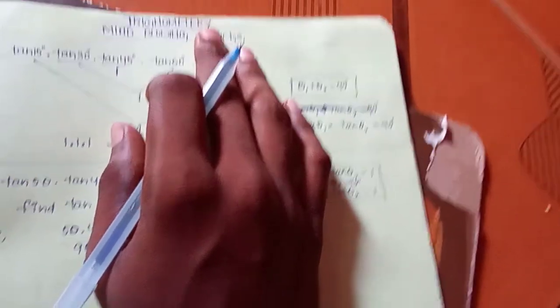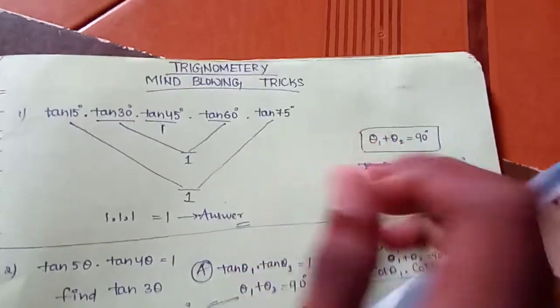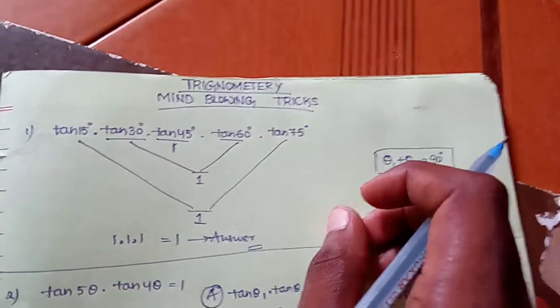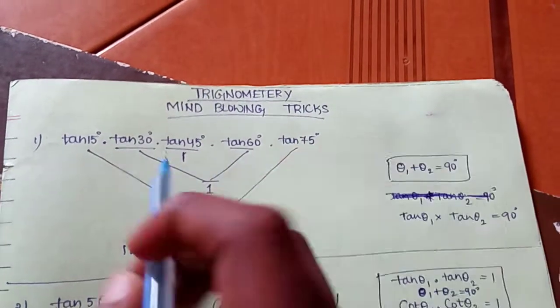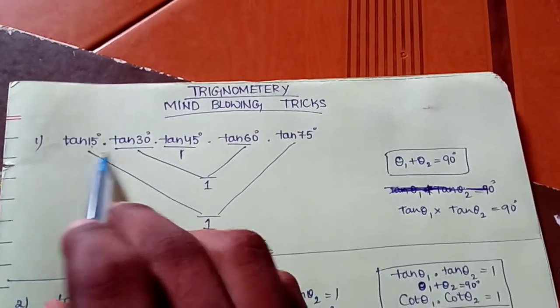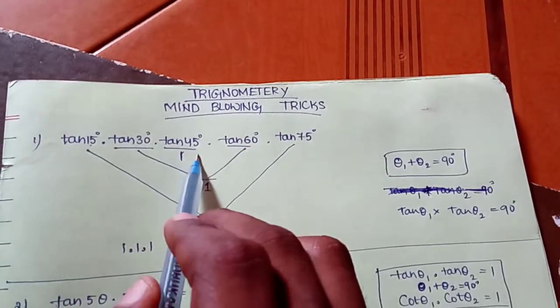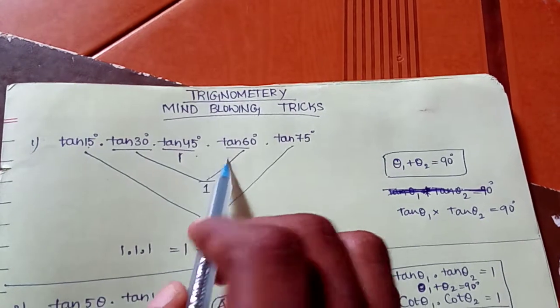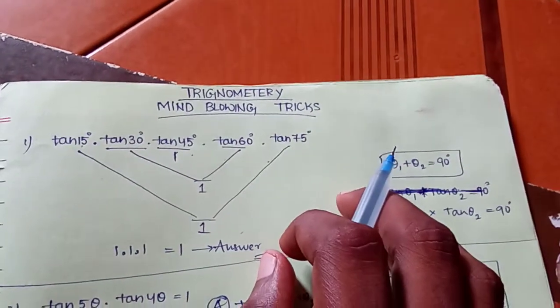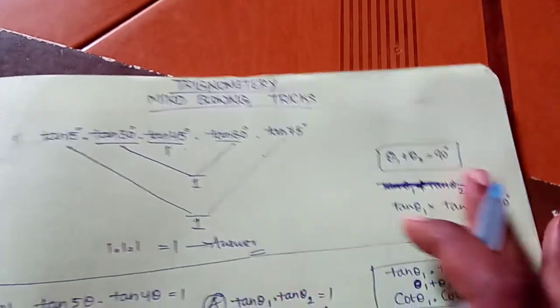So let's start the video. Friends, let's look at trigonometry mind-blowing tricks. We have a question: Tan 15 × Tan 30 × Tan 45 × Tan 60 × Tan 75. What is the value?